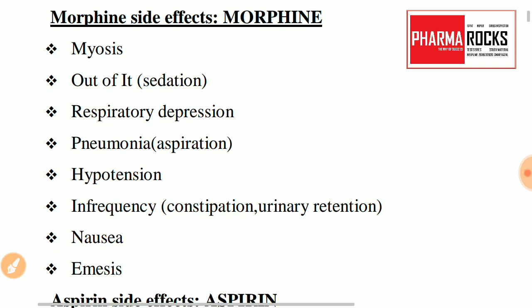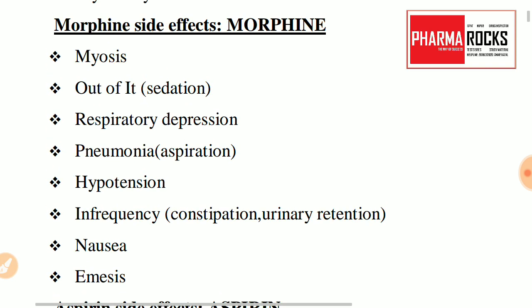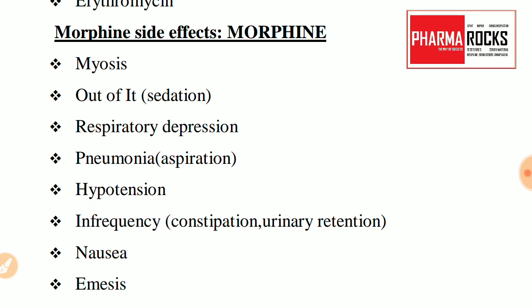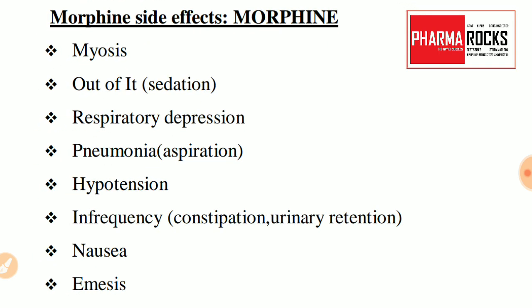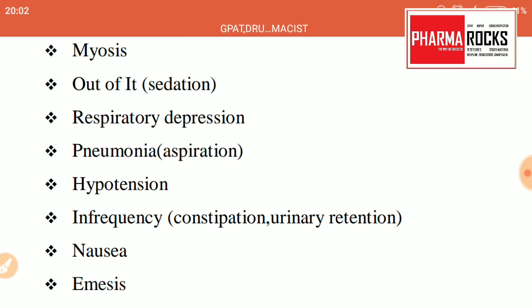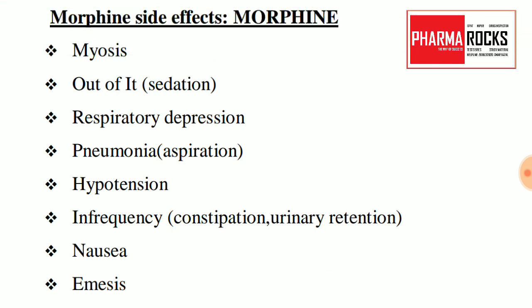Next is morphine side effects. You need to remember the side effects of morphine for various competitive exams as well as your routine semester exams. Students often only write nausea and vomiting as side effects, which is common for all drugs. But if you remember these tricks, you can recall the perfect side effects and get good marks in your exams.